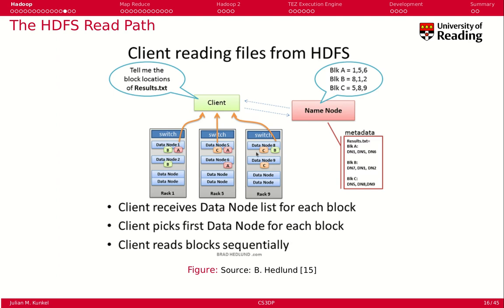For reading from HDFS, the client contacts the namenode to read a file. The namenode uses its metadata to determine what the file consists of — in this case, three blocks A, B, and C — and which data nodes hold each block. For example, block A is replicated on data nodes 1, 5, and 6. The client typically contacts the first listed data node for each block, but if a server is down it contacts the next one, providing high availability. Blocks can be read from different nodes in parallel.